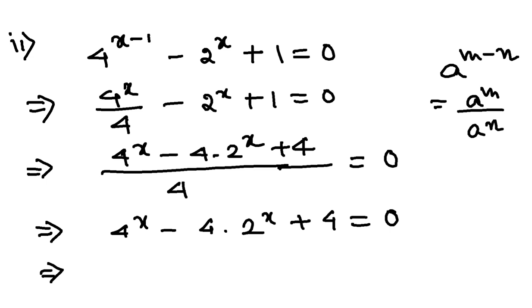Now please be careful here. 4 can be written as 2 to the power x whole square. Rather, let me make it easier for you. 4 can be written as 2 squared whole to the power x. Can I write like this? Minus 4 into 2 to the power x plus 4 equals 0. Done till here.